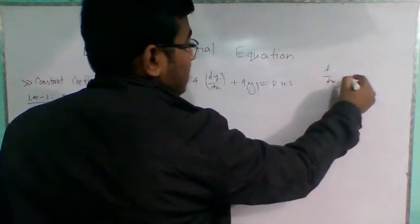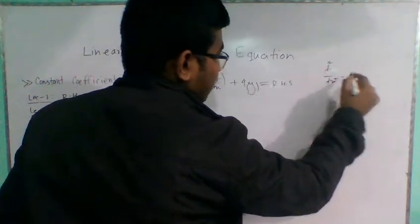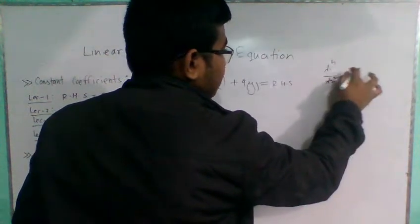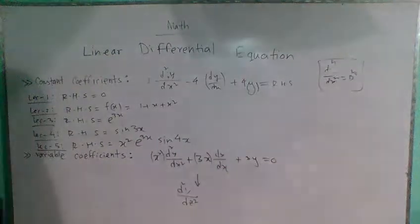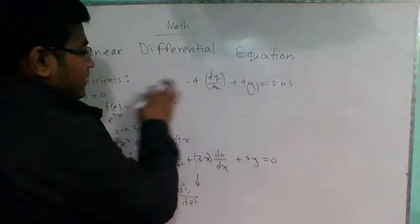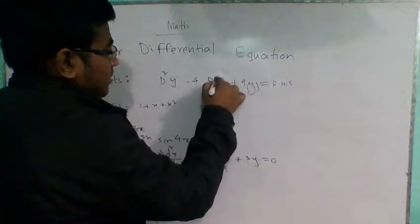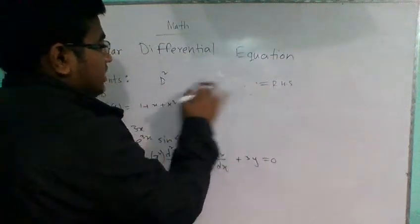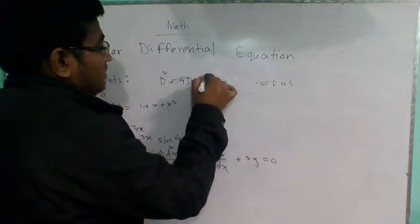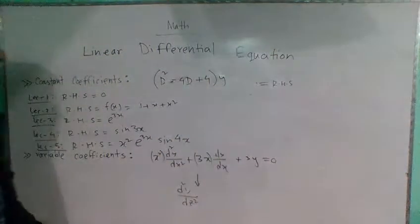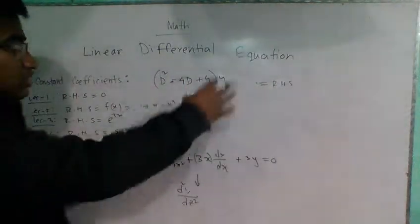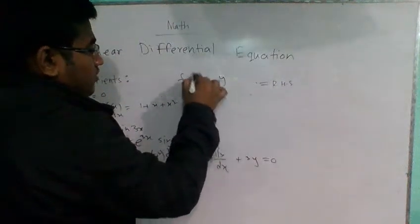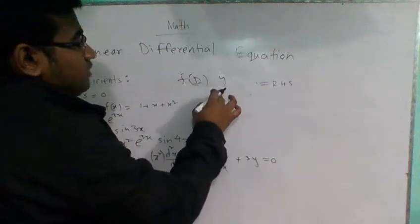The operator is D, where D represents d by dx. The second derivative is D squared, the third derivative is D cubed — capital D cubed — and the nth derivative uses operator D to the power n. So d squared y becomes D squared y, and taking y as common, we get a function of D times y equal to the right-hand side.